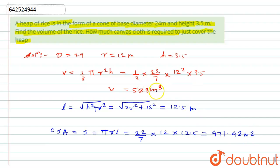Hence the volume of the cone is 528 meter cube and the cloth required to cover the heap is 471.42 meter squared.